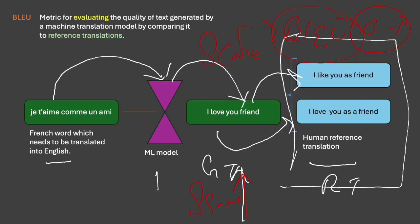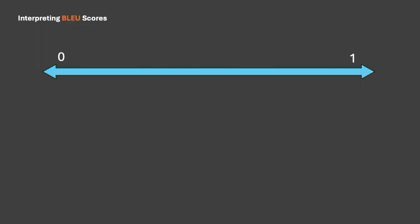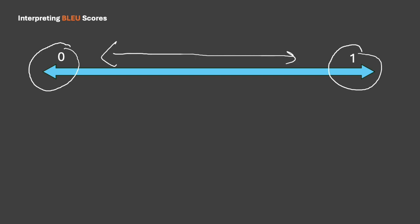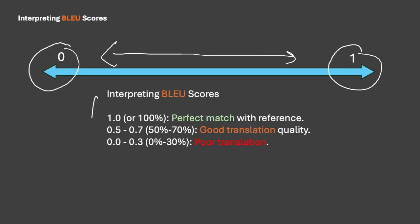Now let's try to understand how to interpret the BLEU score. BLEU score ranges between 0 and 1 — this is the minimum and maximum value. If your BLEU score is 1, that means it is a perfect translation, a perfect match. If the score is 0.5 to 0.7, it is considered a fairly good translation. But if it is between 0 and 0.3, it means it's a very poor translation. This is how we interpret the BLEU score.